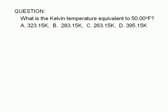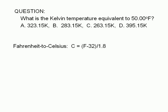To answer this question, we use the formula to convert Fahrenheit to Celsius, then use the formula to convert Celsius to Kelvin. To convert Fahrenheit to Celsius, we subtract 32 from the Fahrenheit reading, then divide by 1.8.